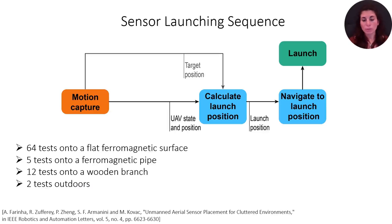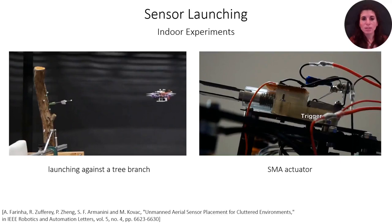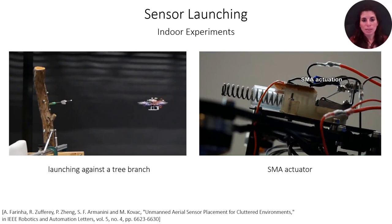Differently from the previous work, within this work we did not look into navigation and path planning for the sensor deployment part. The majority of the experiments were carried out indoors, where with the help of a motion capture system, we were able to know in advance the UAV states — linear and angular — but also the target position. Then, as we approached the target, we would command the actuator on board to launch the sensor. The triggering mechanism weighs only 22 grams and packs 1.55 joules into a spring. This launches a sensor pod which encapsulates an Arduino Nano 33 Sense for a total of 24 grams. The mechanism is currently manually loaded and locks into place using an aluminum part included in the sensor peripherals. In the video on the left side of the screen, we can see the sensor launcher in action for indoor experiments against a tree branch.